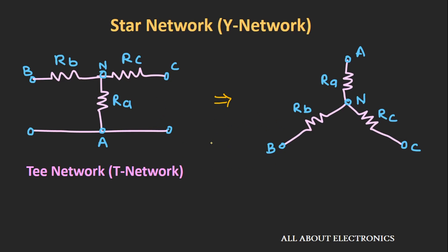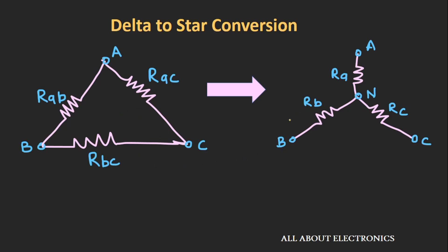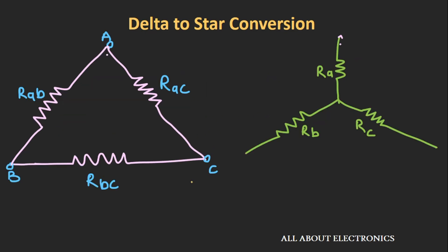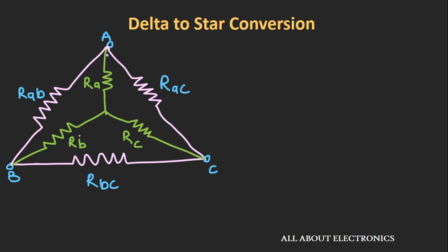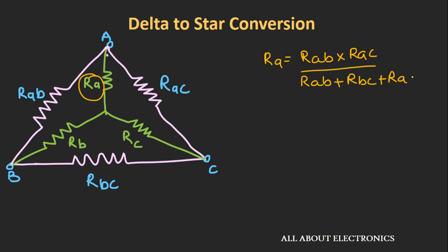Now that we know what a delta network and star network are, let's convert this delta network into the equivalent star network. The resistors RAB, RAC, and RBC are part of this delta network. The first step for the conversion is to draw the star network into the delta network. Now, resistors RAB and RAC are adjacent to resistor RA. So we can write the expression for RA as RAB multiplied by RAC divided by the total resistance, that is RAB plus RBC plus RAC — in other words, multiplication of the adjacent resistors divided by the total resistance of the delta network.